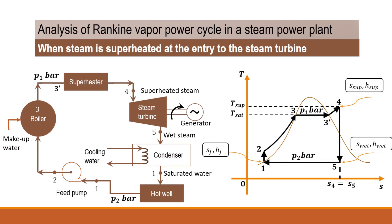The flow diagram and T-S diagram are shown here. The various components present in this flow diagram are: boiler, superheater, steam turbine, condenser, hot well, and feed pump.